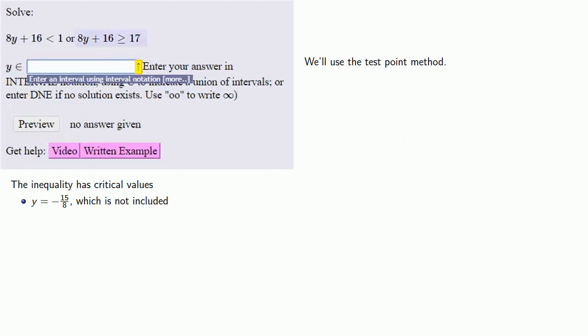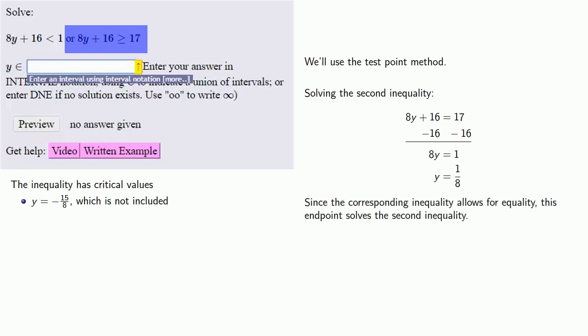The other inequality, 8y plus 16 greater than or equal to 17. We'll ignore the inequality and solve the corresponding equation 8y plus 16 equals 17, which gives a solution y equals 1/8. Like a good math student, we acknowledge the existence of the inequality. Since the corresponding inequality allows for equality, this endpoint solves the second inequality.